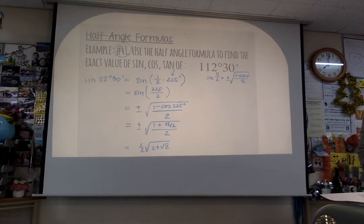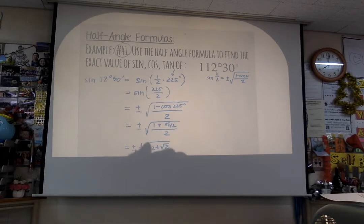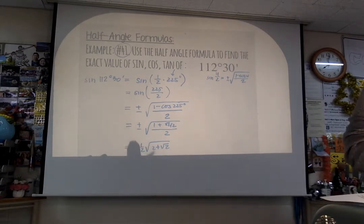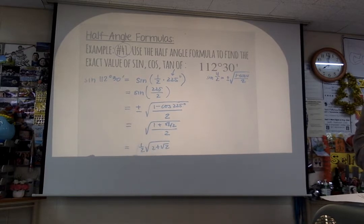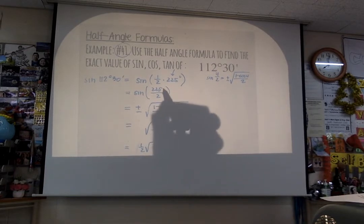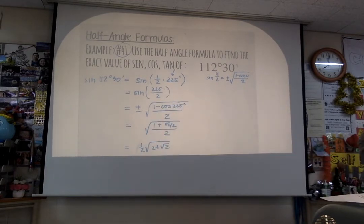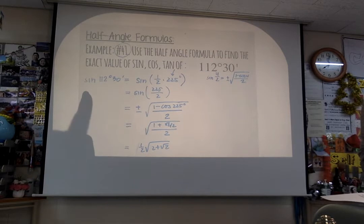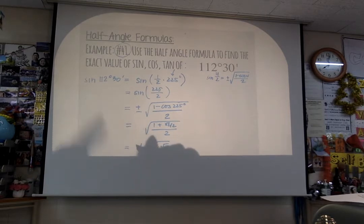I know the answer looks kind of funky, but that's what it is. It should be plus or minus because it depends on the quadrant. Where is 112 degrees and 30 minutes? It's in the second quadrant — therefore the sine is going to be positive.